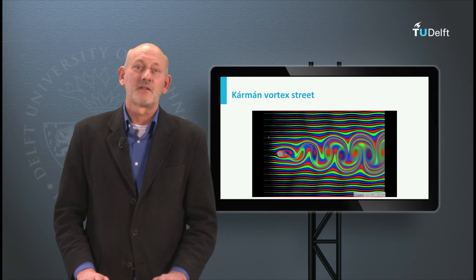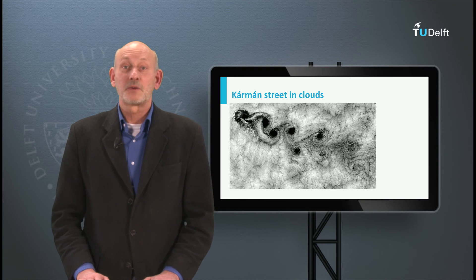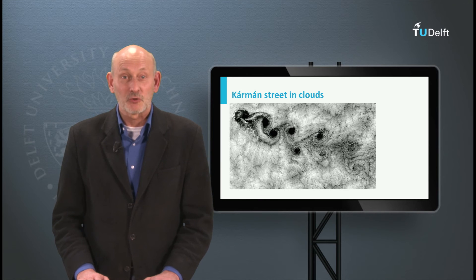And now this is on a small scale. But also on a larger scale, Kármán vortex streets appear. For instance, behind a mountaintop that points into clouds, like you see on this satellite picture near the Juan Fernández Islands close to the Chilean coast.